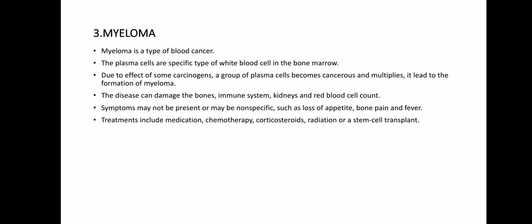Third one, myeloma. Myeloma is a type of blood cancer. The plasma cells are a specific type of white blood cell found in the bone marrow. Due to the effect of some carcinogens, a group of plasma cells becomes cancerous and multiplies, leading to the formation of myeloma. The disease can damage the bones, immune system, kidneys, and red blood cell count.